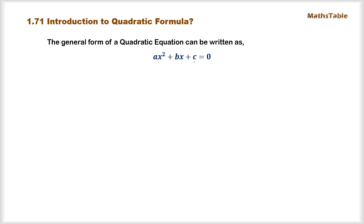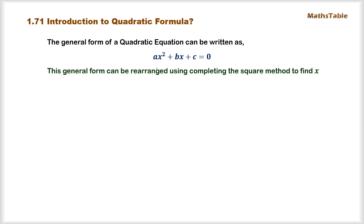What we discussed in the previous sections was how to solve such a kind of equation by using either the sum-product method or factorization method, and also by using the completing the square method. But what if we apply the completing the square method on this general formula directly using the same variables a, b and c?